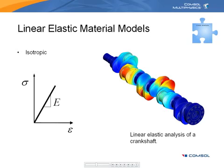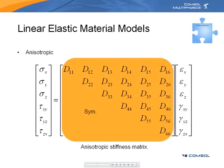In the initial stages of deformation, many materials exhibit a linear relationship between stress and strain. An accepted assumption is that most materials have the same stiffness properties in all directions — the material is said to be linear elastic as well as isotropic. However, many materials exhibit some type of anisotropic behavior, and fully anisotropic elastic materials require 21 parameters to specify their elastic behavior.